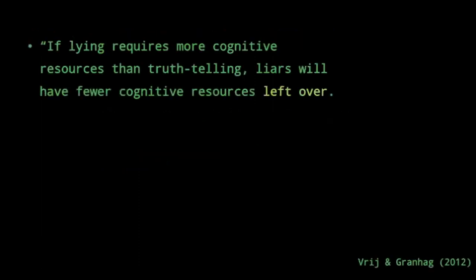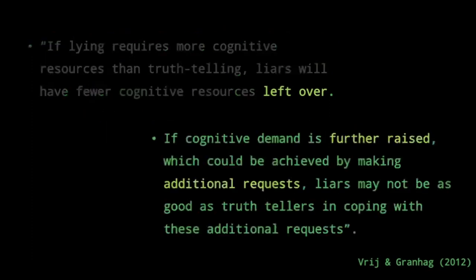Here's essentially an expanded version of the hypothesis, and I'll read a direct quote with some emphasis added: if lying requires more cognitive resources than telling the truth, lies would have fewer cognitive resources left over. And if cognitive demand is further raised — which could be achieved by making additional requests — then liars may not be as good as truth tellers in coping with these additional requests.